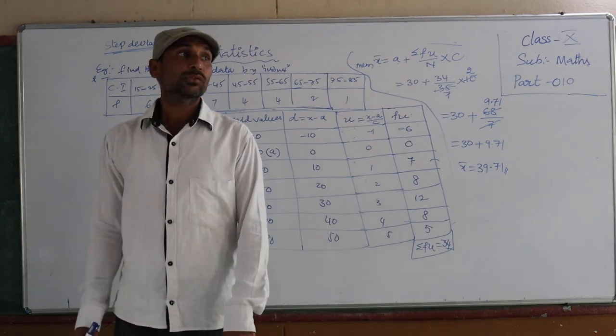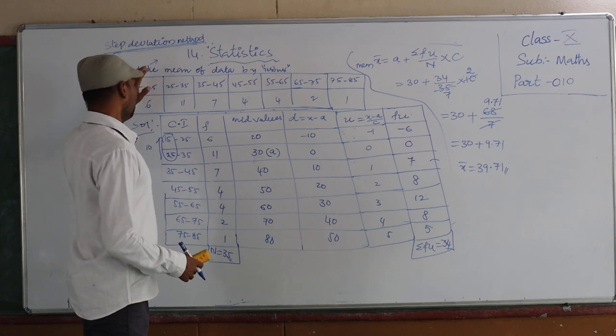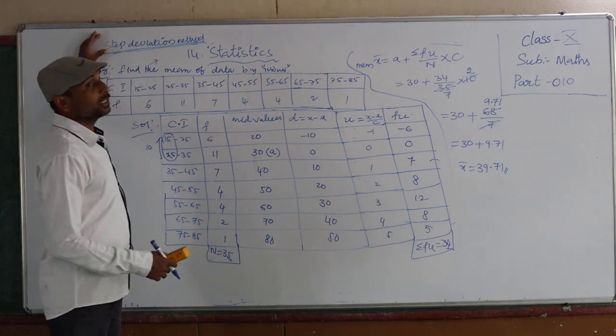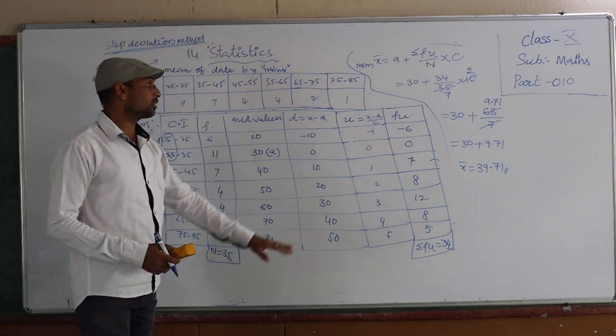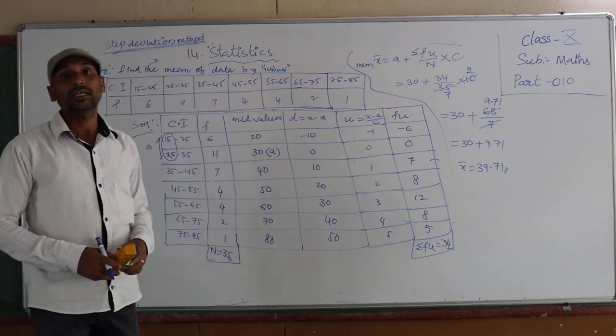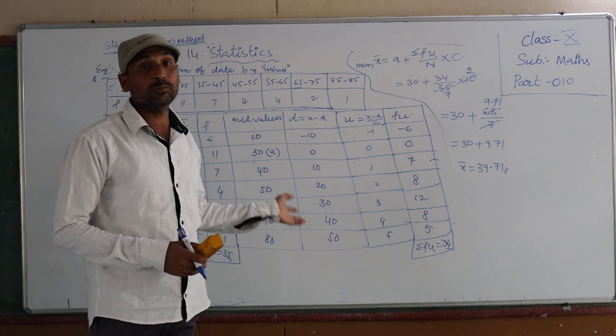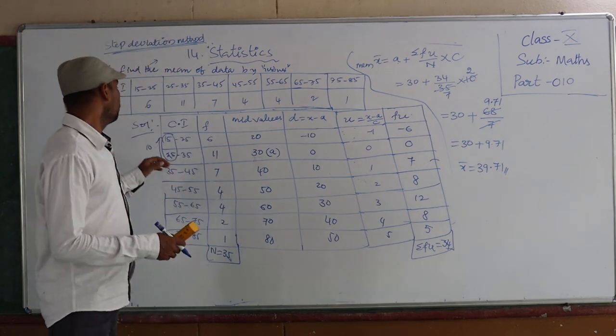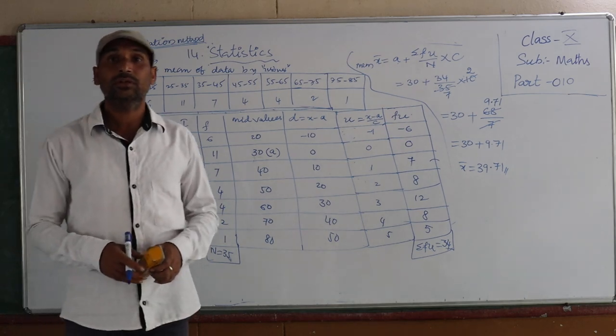So children, by using three methods we can find the mean. The most important method is the step deviation method. So this is the process. You have to practice more and more problems. We will discuss the exercise problems in the next video. Thank you.